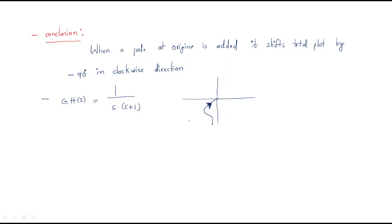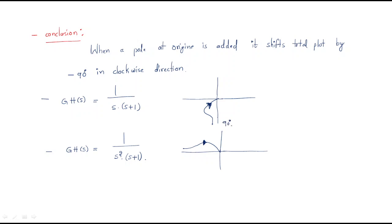If another pole at the origin is added, making it 1/(s²(s+1)), the plot shifts again. It starts from here and ends here. We are starting at minus 90 degrees when one pole is present; if there are two poles at origin, the starting direction becomes minus 180 degrees and the ending direction becomes minus 270 degrees.